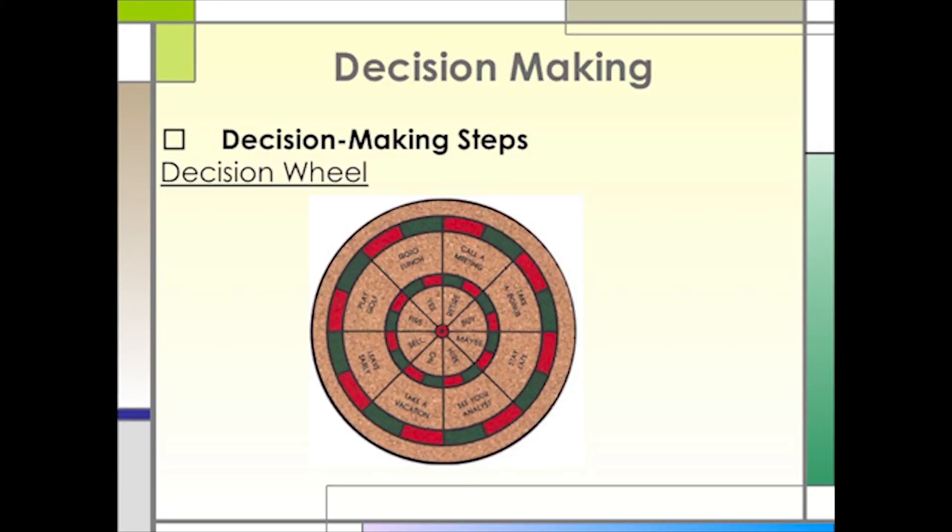Another way to make decisions is with a decision wheel. As you can see, this one rather comically looks like a dartboard. I don't recommend this approach. But a decision wheel laid out with options matched with necessary resources and potential outcomes can be useful as it provides a visual.